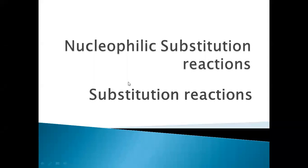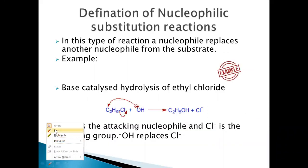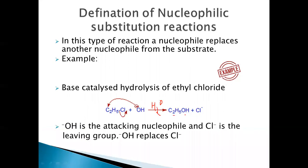In this video I'm going to discuss nucleophilic substitution reactions, having already dealt with electrophilic substitution reactions in my previous video. Taking the example of the hydrolysis of ethyl chloride in the presence of a base, the product formed is ethyl alcohol and Cl minus. Here Cl minus is replaced by OH minus, so it's a substitution reaction where the nucleophile OH minus is replacing another nucleophile — making it a nucleophilic substitution reaction.